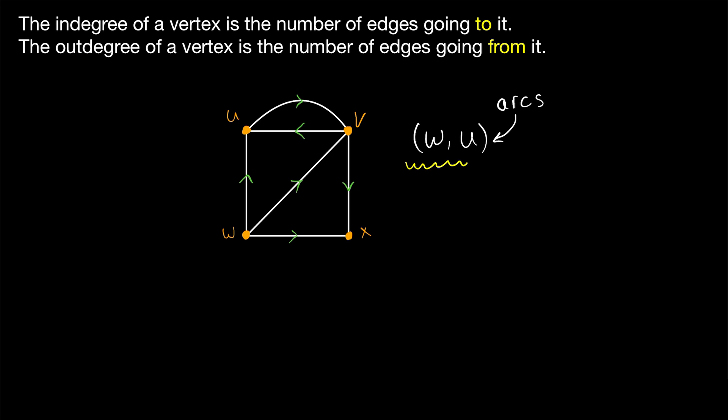So what is this arc doing? It's going from or out of the vertex W, and it's going to or in the vertex U. So looking at the vertex U, for example, what is the in-degree of U? It's denoted like this, I-D-U. What's it equal to? The number of edges going to U. Well, that would be two.